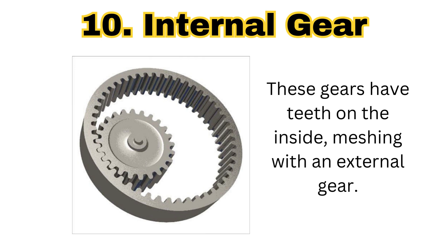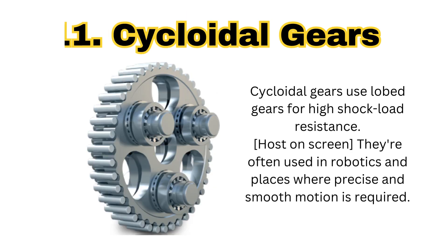The next type of gear is the internal gear. Here the internal teeth mesh with an external gear. Internal gears are used in the planetary gear system, and you can also see internal gears in the bicycle hub.